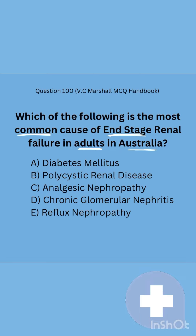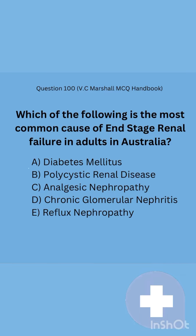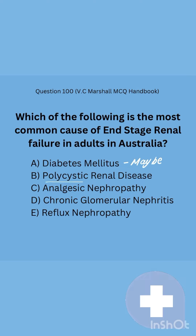The answer needs to be a condition that affects adults in Australia, which is a first-world healthcare setting. Option A is diabetes mellitus — a tempting choice because diabetes is an obvious cause of kidney failure in most countries. However, it must be the most common cause specifically in Australia, so other answers need to be considered. Also, they've written 'diabetes mellitus' and not 'diabetic nephropathy,' which is worth noting. So I'll say maybe, but I'll carefully review the other answers.